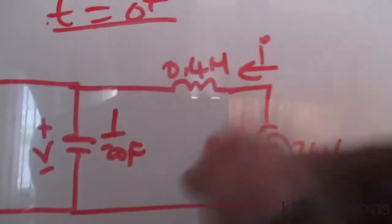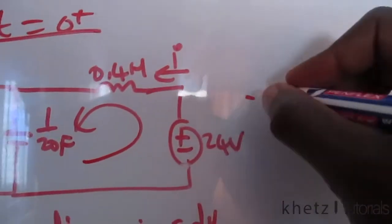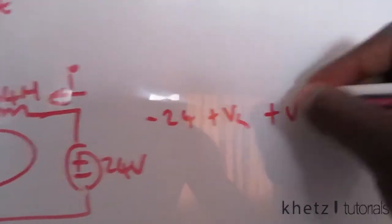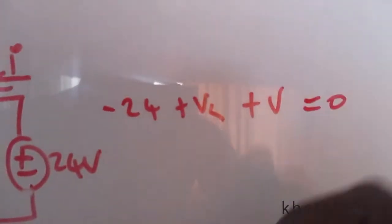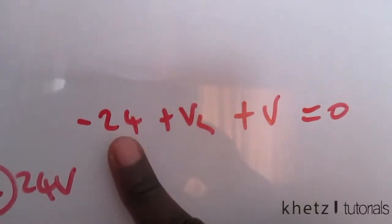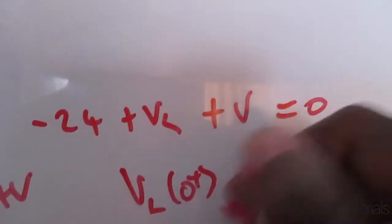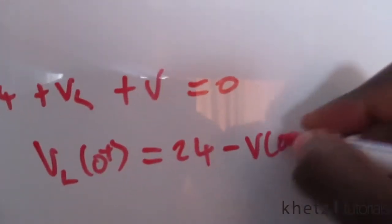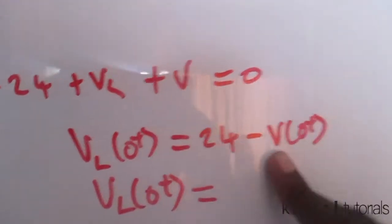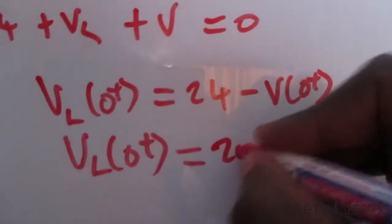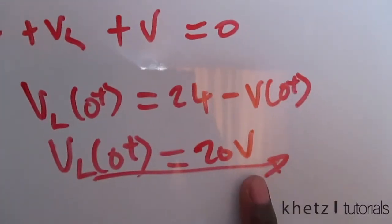To find v_L, we go around the new circuit: negative 24 plus v_L plus v equals zero. Just after zero, we know v(0⁺) equals 4 volts, so v_L(0⁺) equals 24 minus 4 equals 20 volts.